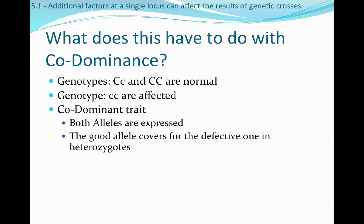So what does this have to do with codominance? For the cystic fibrosis trait, it can be expressed as a big C or a little c. Big C is dominant and little c is recessive. Genotypes of the heterozygous form (big C, little c) or homozygous dominant (big C, big C) code for normal phenotypes with normal CFTR proteins. Genotypes of little c, little c are the ones that really have severe blockages, repeated chest infections, and lots of inflammation.